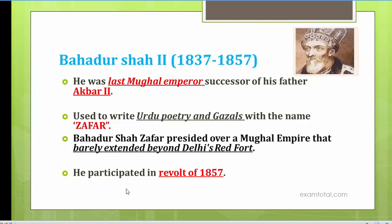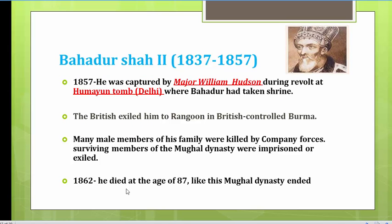The main event during his rule was the Revolt of 1857 — the first war of independence. Bahadur Shah Zafar participated in this revolt; although very old, he was announced as the leader and emperor of India during the revolt. He was soon captured by Major William Hudson at Humayun's Tomb in Delhi where he had taken shelter. After capture, he was exiled to Rangoon in Burma, then under British control. All male members of his family were killed by company forces, and surviving members of the Mughal dynasty were imprisoned or exiled.